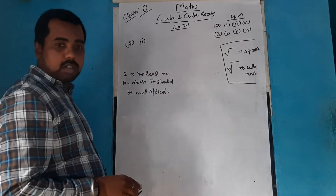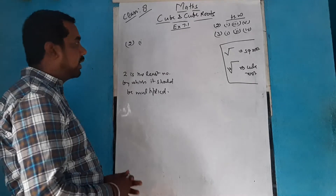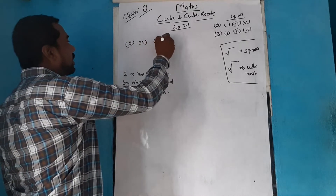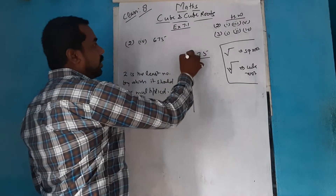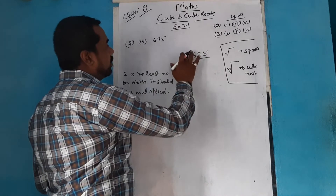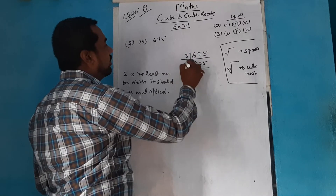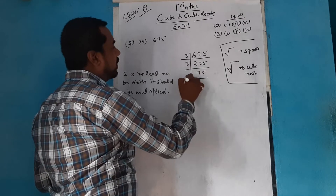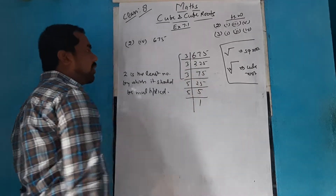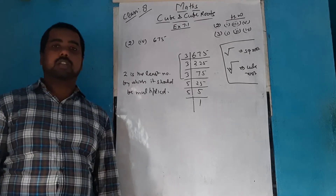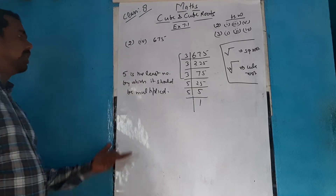Now for part 4 of question 2, the number is 675. Applying prime factorization: 675 = 3 × 3 × 3 × 5 × 5. When forming pairs of 3, we get one complete pair of 3 for the factor 3, but the pair of 3 for factor 5 is not complete — one 5 is missing. So 5 is the least number by which 675 should be multiplied to make it a perfect cube.